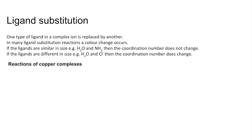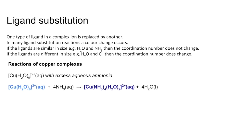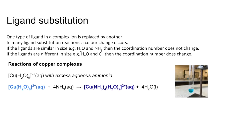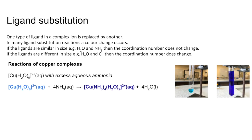We'll start by looking at some ligand substitution reactions of copper complexes. The first one is the hexa aqua copper 2+ ion with excess aqueous ammonia. You can see from the equation that four of the water ligands have been substituted with ammonia ligands. You start out with a pale blue solution and it goes to a deep blue solution.